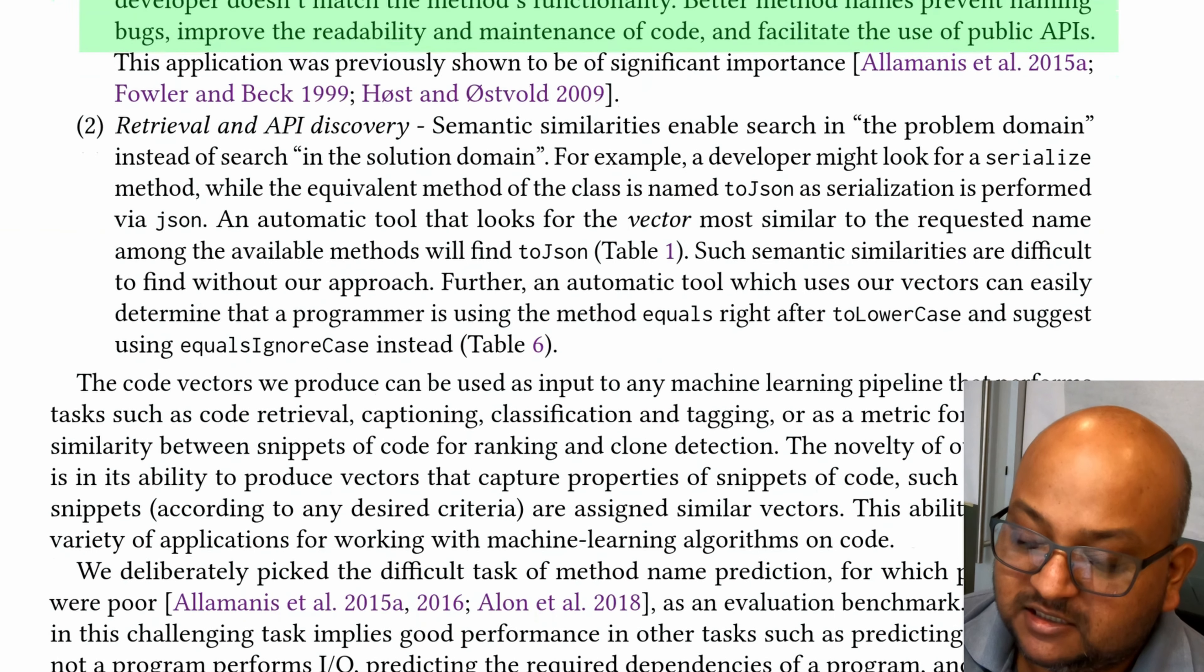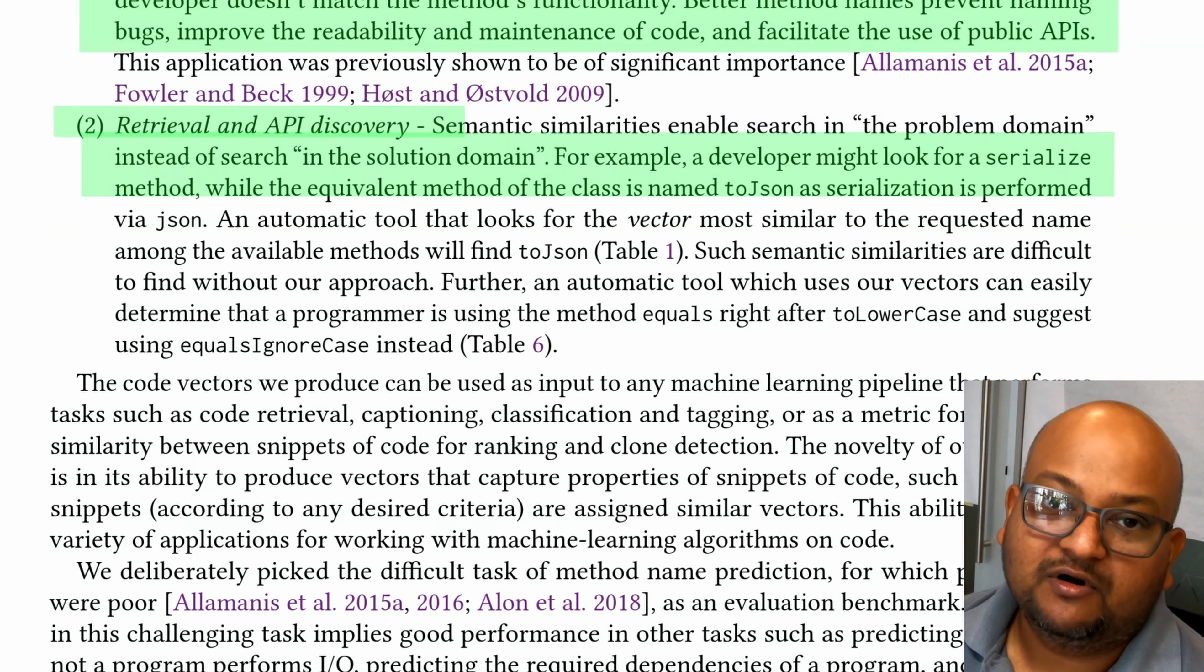Another application is finding out what API methods already exist. A programmer might not know about the existence of a library method and might be looking for slightly different names that accomplish the same thing. And this technique can point out existing methods that have the same or similar logic.